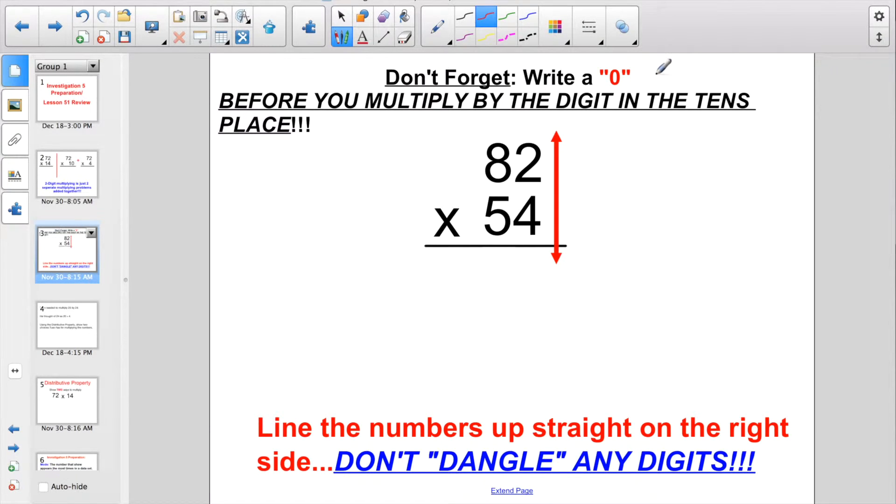So the big thing that I want to reiterate here, you line the numbers up straight on the right side. You do not dangle any digits when you are doing real two-digit multiplying. If I was multiplying 82 times 54, I'm not even worried about the 5 right now. I'm going to start with the digit in the ones place, and I'm going to go 4 times 2. Well, what is 4 times 2? Hopefully, everybody here in the room knows that's 8. Then I'm going to multiply the other digit by 4, 4 times 8. Well, what's 4 times 8? Hopefully, you know that's going to be 32, right?